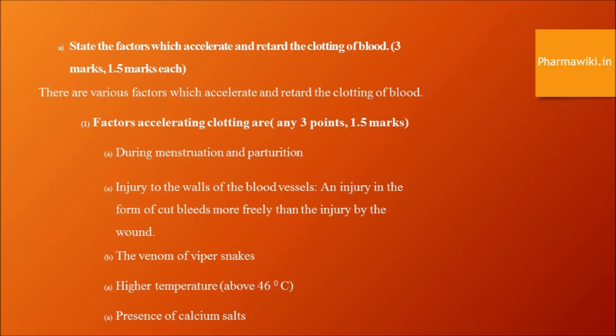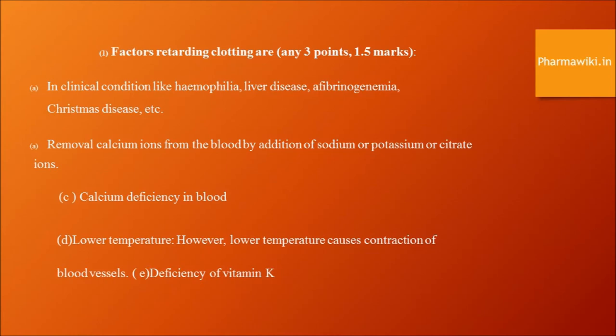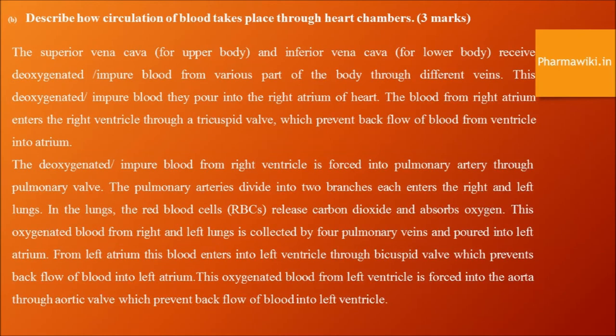How does circulation of blood take place through the heart chambers? The superior and inferior vena cava receive deoxygenated impure blood from various parts of the body through veins and pour it into the right atrium. Blood from the right atrium enters the right ventricle through the tricuspid valve, which prevents backflow of blood from the ventricle into the atrium.